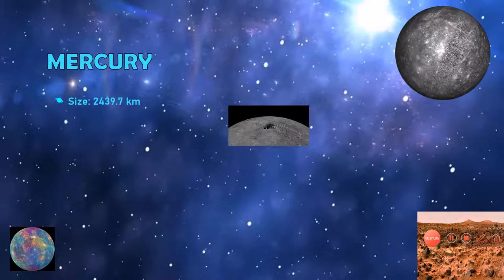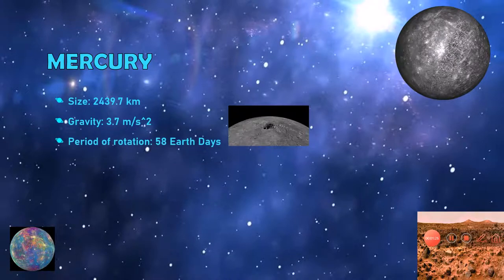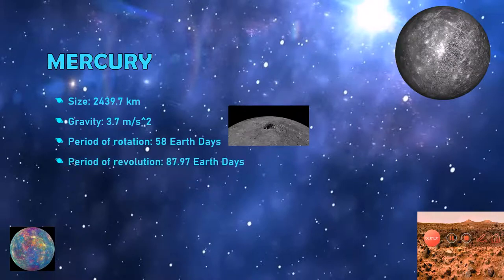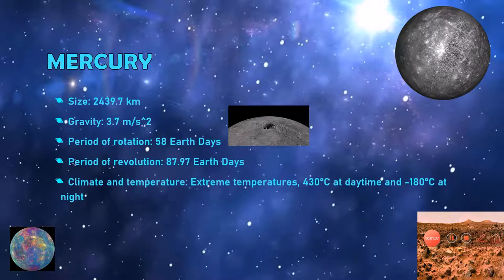Mercury. The size of Mercury is only 2,439 kilometers. Mercury's gravity is 3.7 meters per second squared. Meters per second squared is basically a unit of acceleration which means every second you fall 3.7 meters more. Mercury's period of rotation is 58 Earth days. Mercury's period of revolution or its year is 87.97 Earth days. Mercury's climate and temperature: it has extreme temperatures ranging from 430 Celsius in the morning and minus 180 Celsius at night.